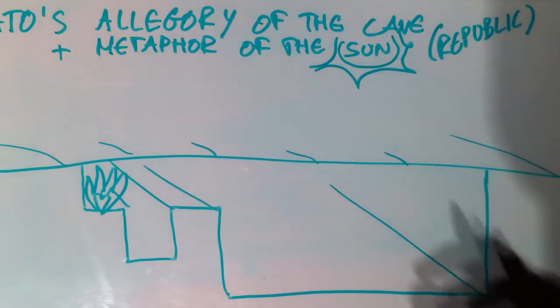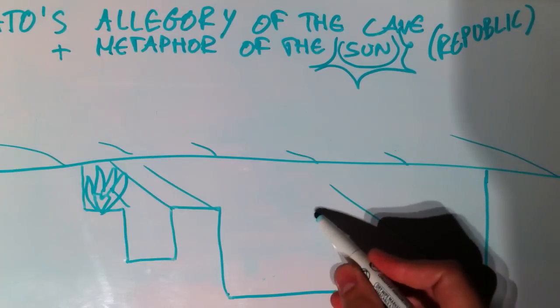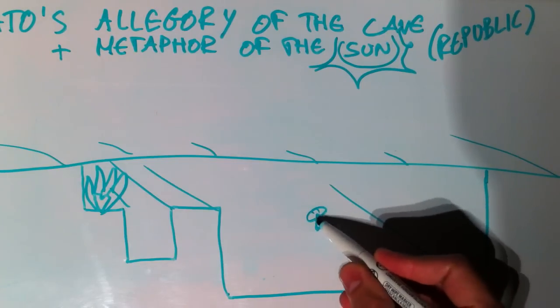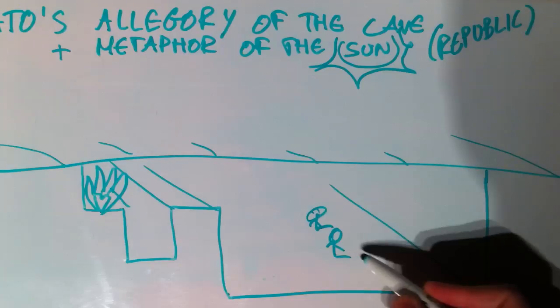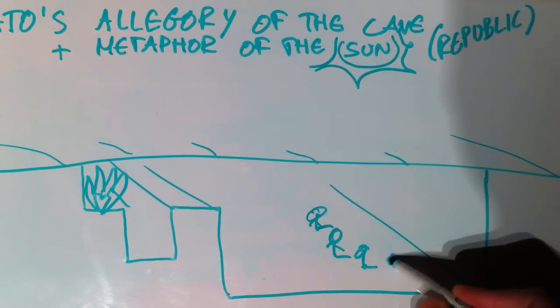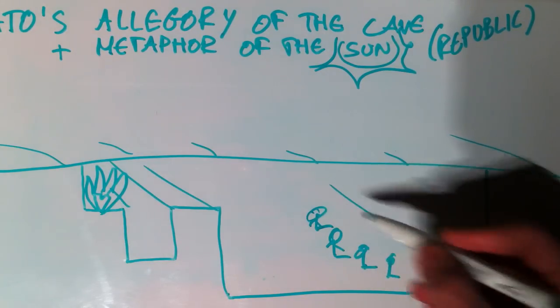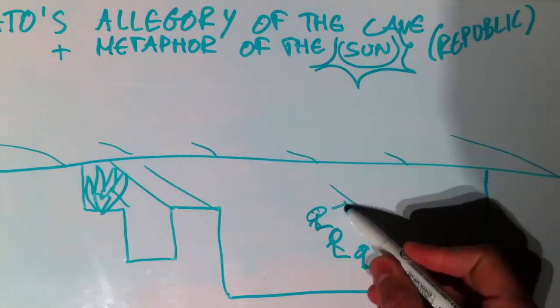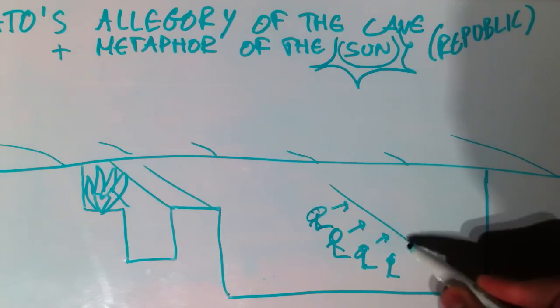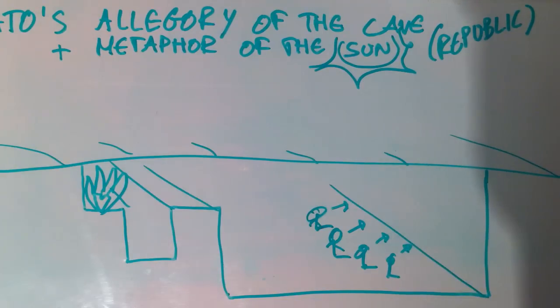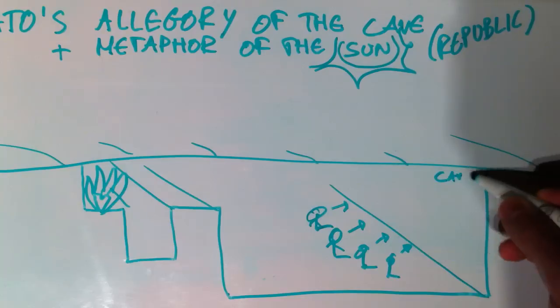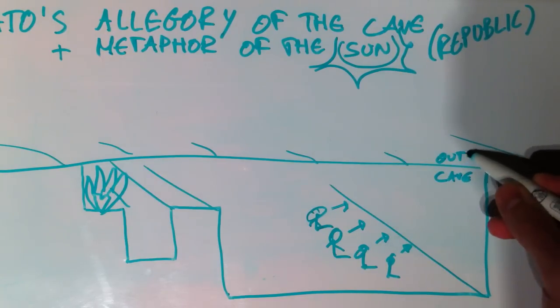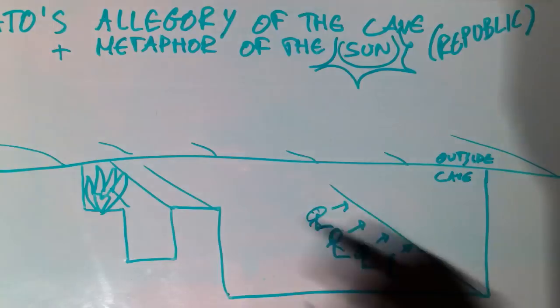So what is the allegory of the cave about? There are some people who are prisoners in a cave, and they are sitting in front of a wall, facing the wall. In fact, they can't move their heads, so they have to face this wall. So this is inside of the cave, and this is outside. It's important that it's under the ground, because later on we'll go outside.